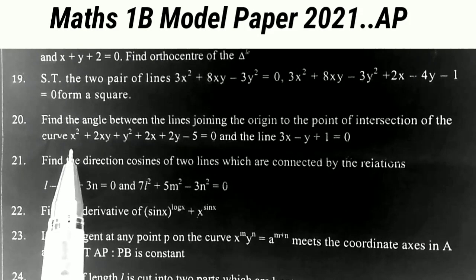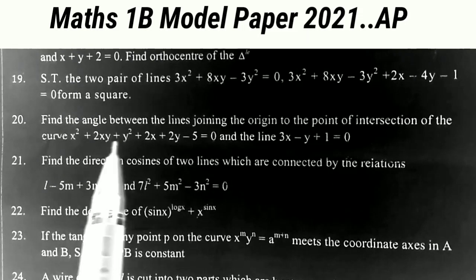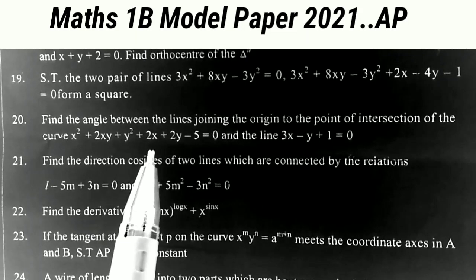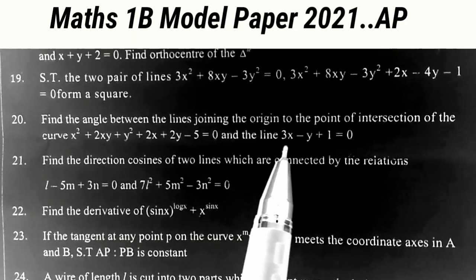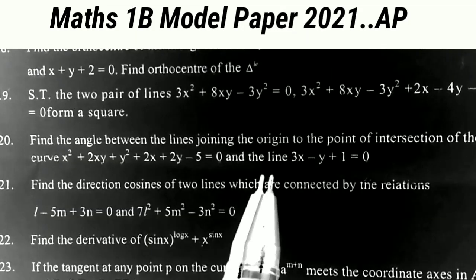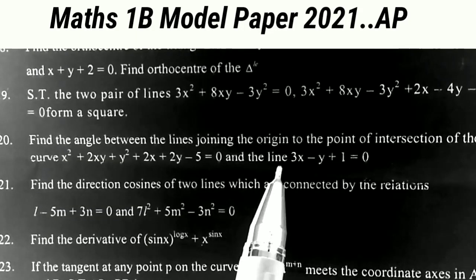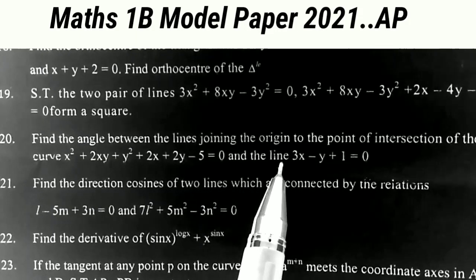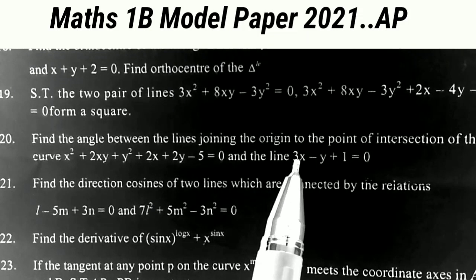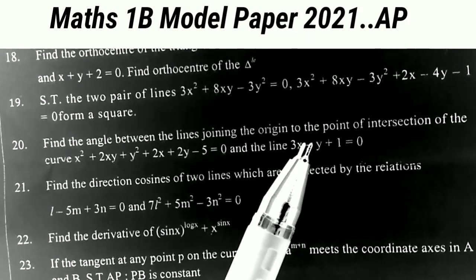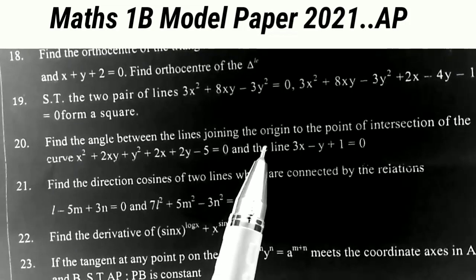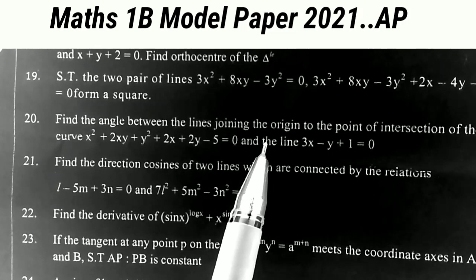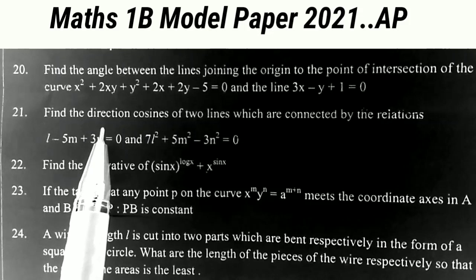Sum number 20: find the angle between the lines joining the origin to the points of intersection of the curve x² + 2xy + y² + 2x + 2y - 5 = 0 and the line 3x - y + 1 = 0. This is the problem from homogenization of pair of straight lines, and it is a guaranteed problem that comes in the public examination paper. This is a very very important topic.